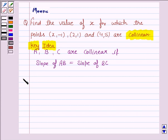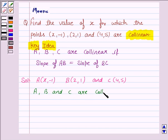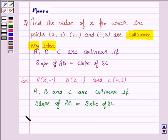Let us now proceed on with the solution. The given 3 points are A(x-1, -1), B(2,1) and C(4,5). Now, the points A, B and C are collinear if slope of AB is equal to slope of BC.